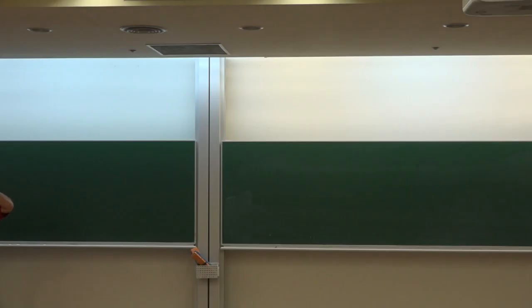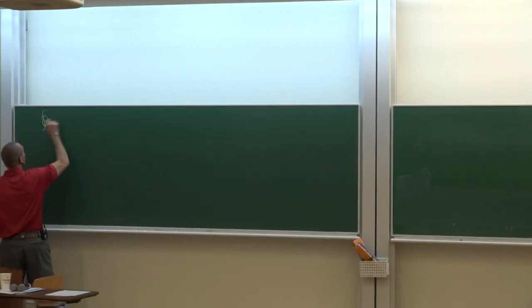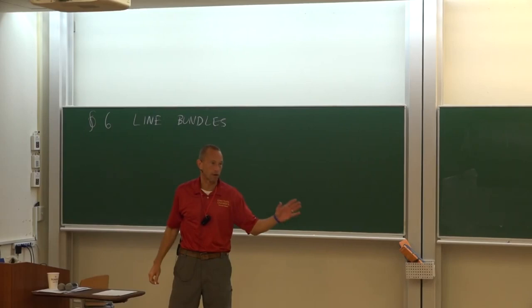So today the game plan is Chapter 6, which is line bundles. I want to start with a maybe 10-minute quick refresher on vector bundles and what they are.